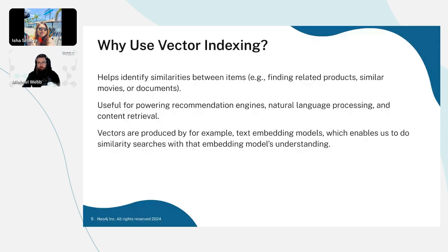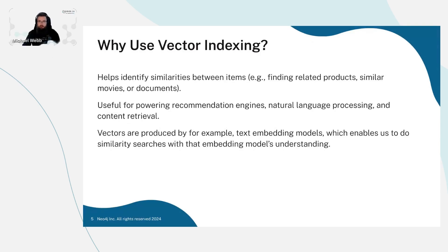So why do we want to use vector indexing? Vector indexing helps us identify similarities, which can be useful for things like finding related products, similar movies or documents. That's of course useful for powering recommendation engines, useful for natural language processing and content retrieval. Vectors are produced by, for example, text embedding models, which enables us to do similarity searches using the embedding model's understanding.